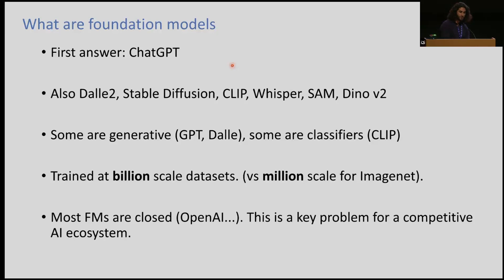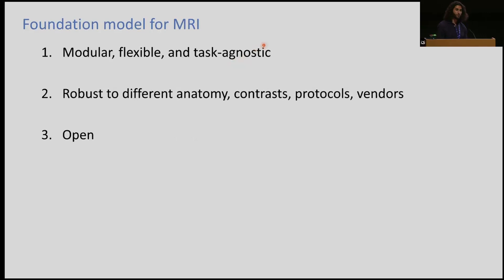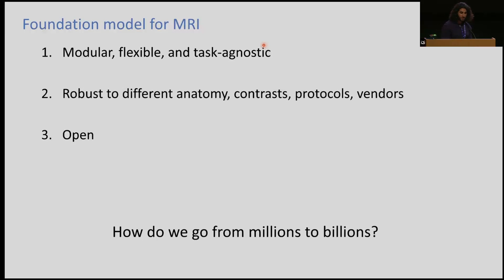Unfortunately, most foundation models are closed, and this is a key problem for a competitive AI ecosystem and reproducibility. So what would a foundation model for MRI have? These are just my own recipe of what I would like. It should be modular, flexible, task agnostic — meaning it's not just designed for one particular task. It should be robust to different clinical environments, meaning different anatomy, contrast, protocols, MRI vendors, and ideally it should be open as well.